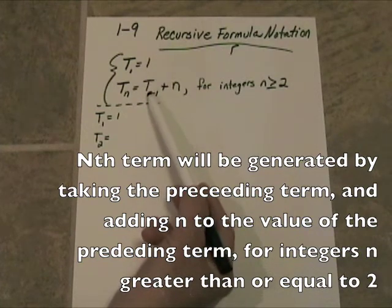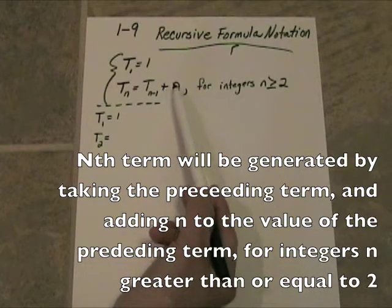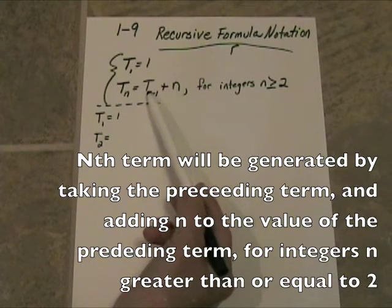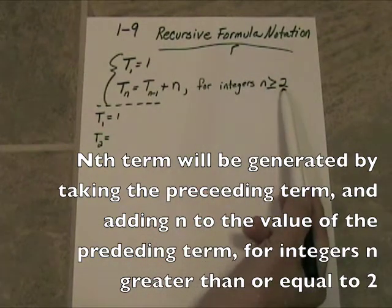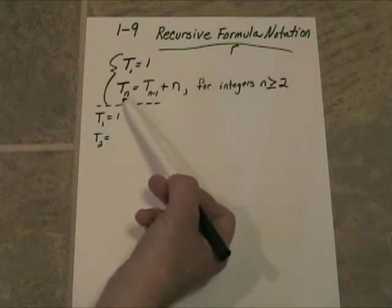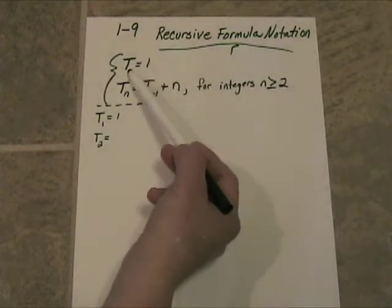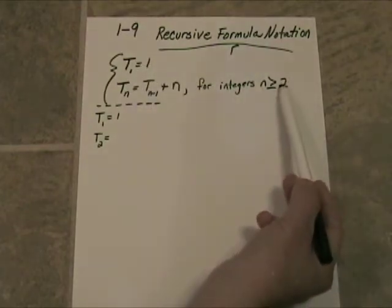in this case t sub n minus 1, and adding n to the value of the preceding term. For integers, n greater than or equal to 2, again, because n stands for the number of term you're on, and we already have the first term, the value has been given to us. So we're going to start here where n is greater than or equal to 2.